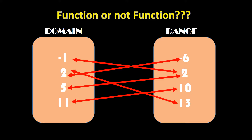So first, you are going to check whether all of your elements are connected. Next, you count the number of connectors or lines — it must be only one. Let's start: negative one has only one connector, connected to 2 in the range — that's okay. Next, we have number 2 in the domain. If you count the lines connected to number 2, we've got one, two — there are two lines. So this mapping is not a function already, because that element of your domain has two lines attached to it.